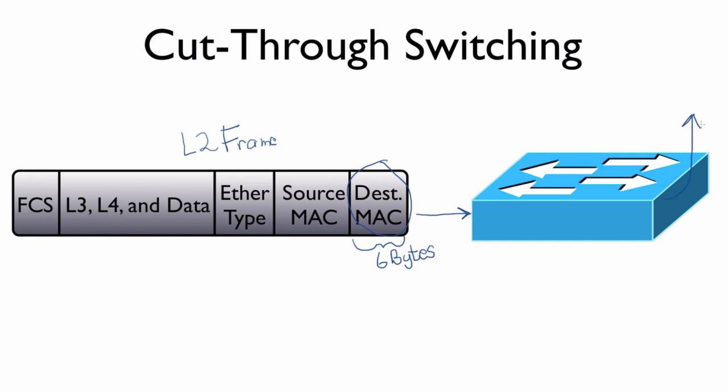However, because we start sending the frame almost immediately, we don't know yet, or the switch doesn't know yet, if it's a valid frame. Maybe it's messed up. We haven't even come close to interrogating the frame check sequence here at the end to see if there is potentially an error in the frame. We just say it's going to this MAC address, I trust that it's a good frame, and off we go.